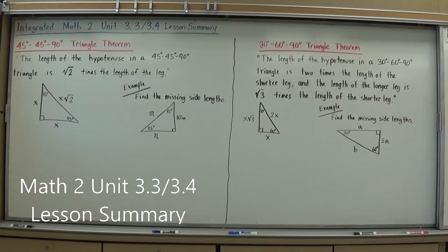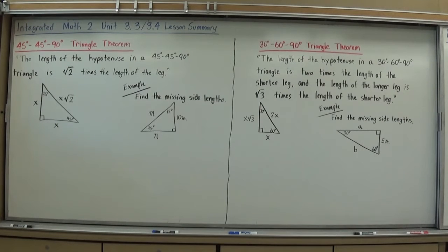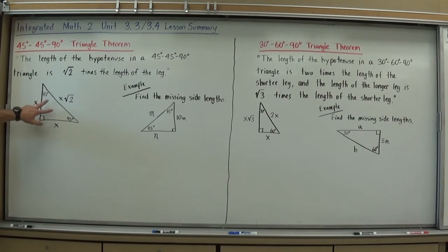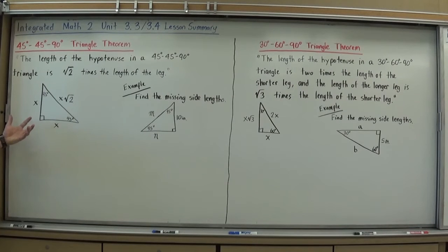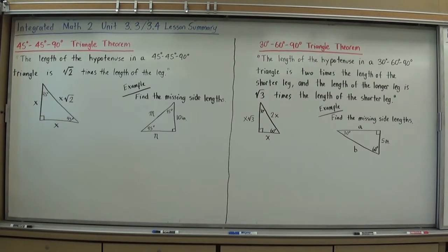Right triangles have certain degree measures, and because of that, have certain side length measures and ratios that we can memorize and learn. The first triangle we're going to look at is a 45-45-90 triangle. This is an isosceles triangle, which means two of the side lengths are going to be the same. The rule is this: the length of the hypotenuse in a 45-45-90 triangle is root 2 times the length of the leg.